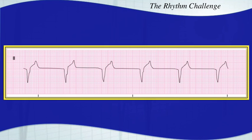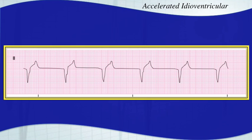Feel free to hit pause and walk away for a little bit. This rhythm is an accelerated idioventricular. You've got a wide, fast rhythm. These are probably actually retrograde P waves on top of the T waves — you don't see that very often. But it's wide, it's regular, it fits the accelerated idioventricular rate. That's what you've got there.